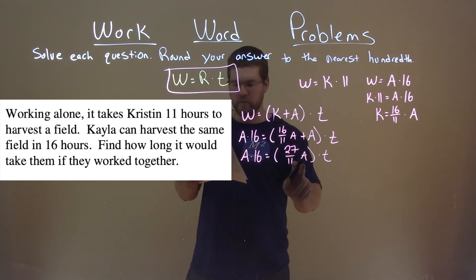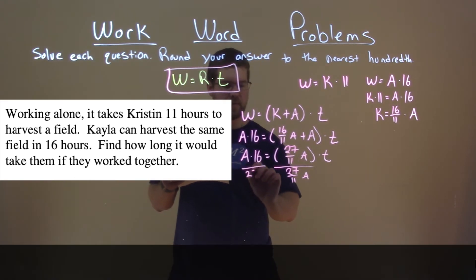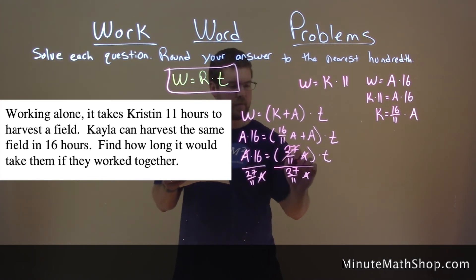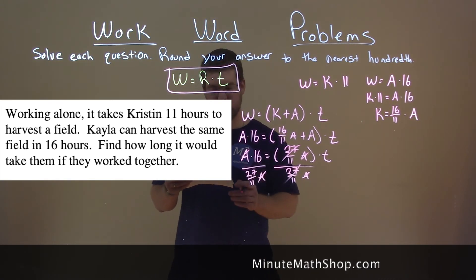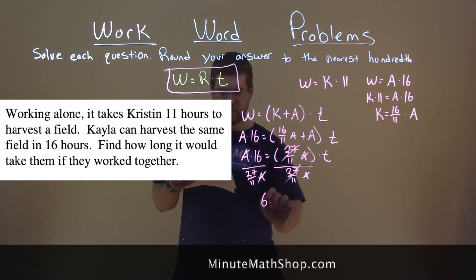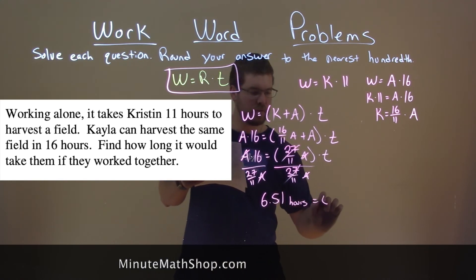From there, we divide both sides by 27 over 11 A. And be careful here. The A's cancel. This number cancels here, 27 over 11. And 16 divided by 27 over 11 is 6.51 hours. And that is equal to our time.